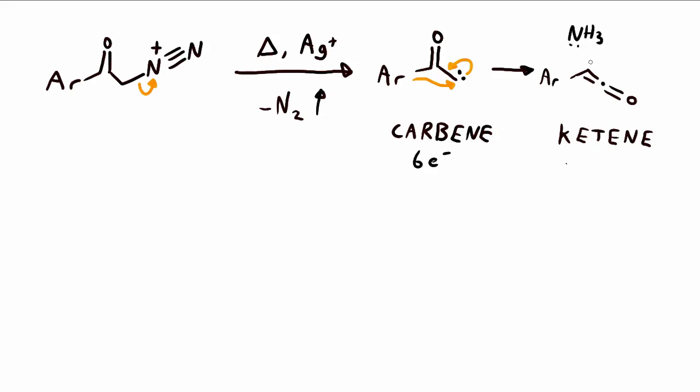And so what the authors did is they react their ketene with ammonia, the electrons temporarily go up onto the oxygen, and then that's almost like some sort of enol which can pick up a proton at the end. And the product after this nucleophilic addition to the ketene is a terminal amide.